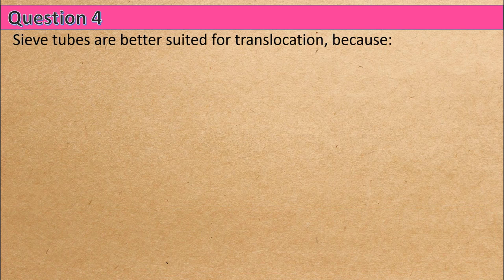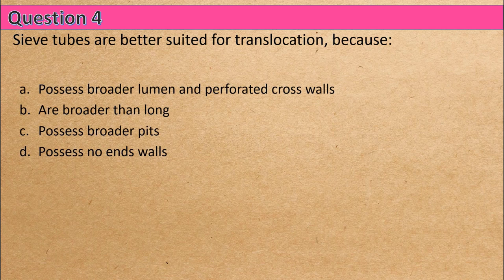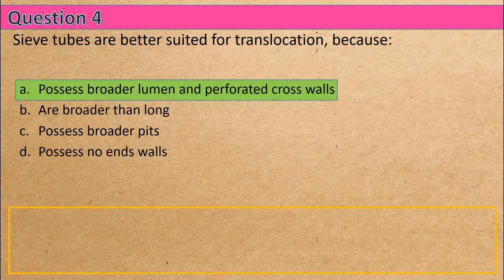Question 4: Sieve tubes are better suited for translocation because — Option A: they possess broader lumen and perforated cross walls, Option B: are broader than long, Option C: possess broader pits, Option D: possess no end walls. The correct answer is Option A: possess broader lumen and perforated cross walls.